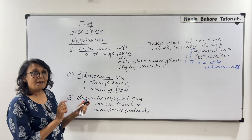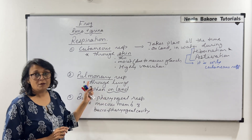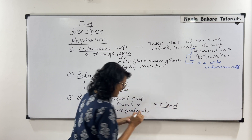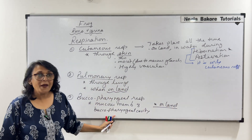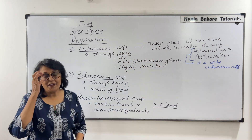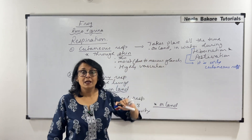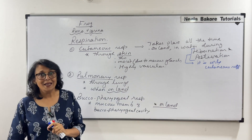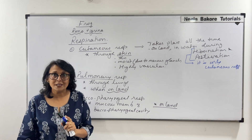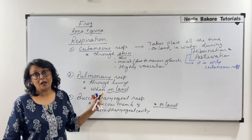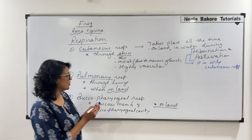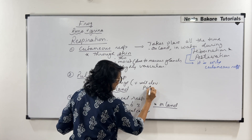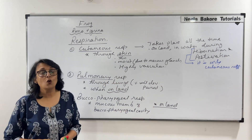When frogs are on land, respiration is pulmonary, so the respiratory structures are lungs, buccopharyngeal cavity, and skin. When the animals are in water, it is only skin. When the frogs are hibernating or estivating, it is only the skin. Skin helps in gaseous exchange all the time, but whenever they are on land, lungs also help. Lungs are very well developed, paired structures, present in the upper part of the trunk.